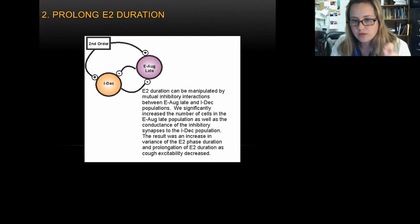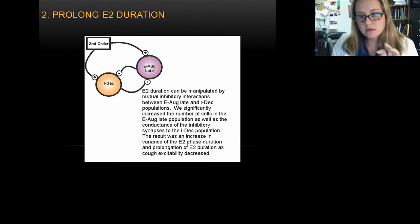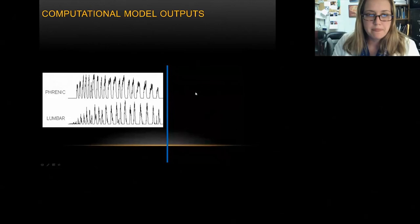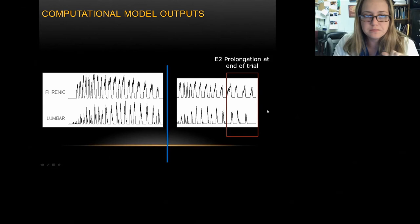To gain more control over E2 duration, the key relationship involves the E-augmenting late neurons occurring at the very end of expiration, and the I-decrementing neurons occurring at the beginning of inspiration. By modifying this reciprocal inhibitory population, as the expiratory drive decreases, these intervals increase. In our previous model iteration that did not occur, but now in the current model we are actually getting prolongation of E2.